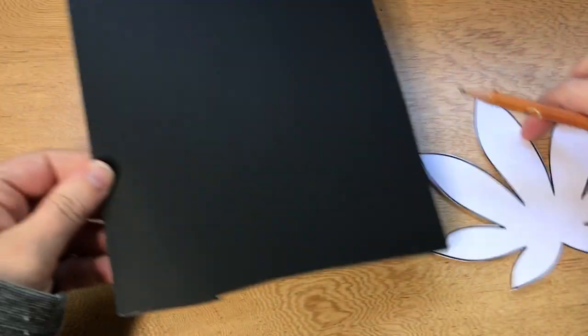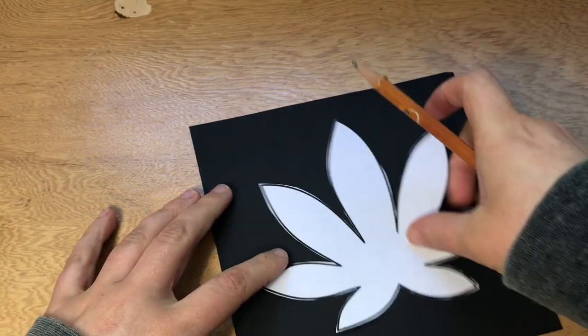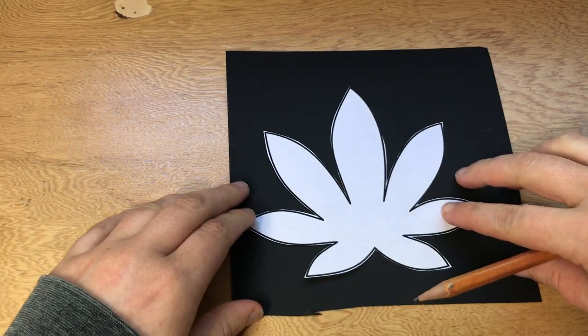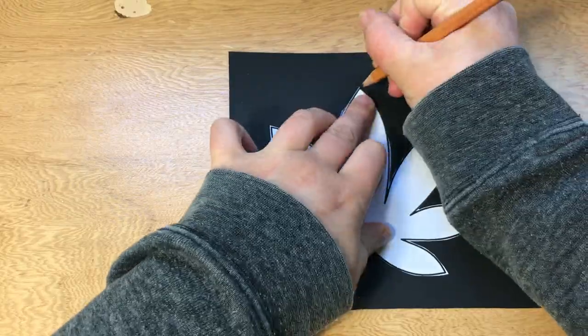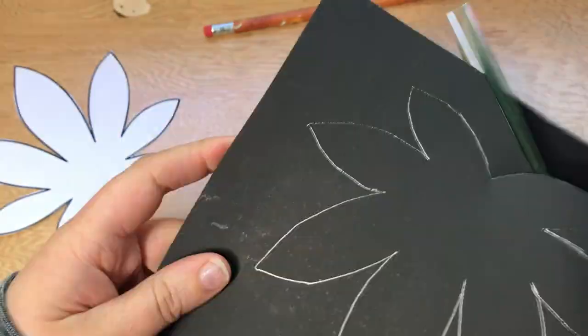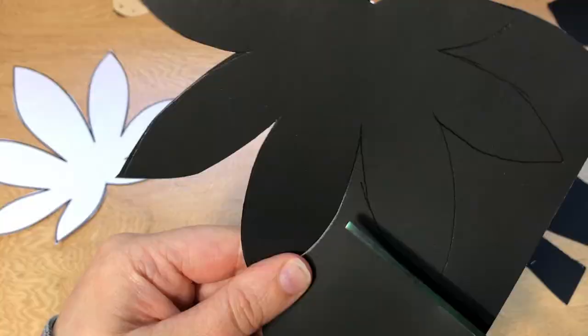So now we are going to place it on our black paper and trace around the outline using our pencil. Once the leaf is totally outlined, cut along the lines.